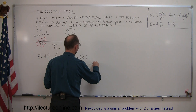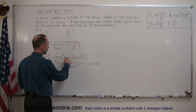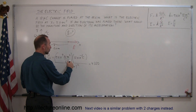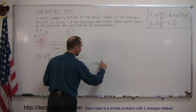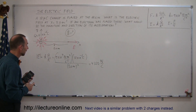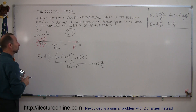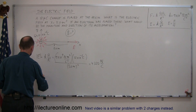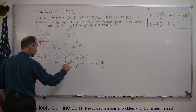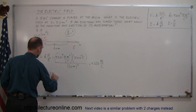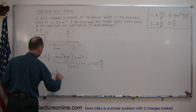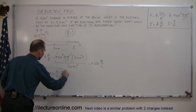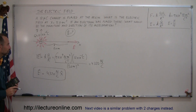Using a calculator: 9e9 times 12e−6 divided by 25 gives us 4,320. The meters squared cancel, and the coulomb squared divided by one coulomb leaves newtons per coulomb — which is the unit for the electric field. So the magnitude of the electric field is 4,320 newtons per coulomb. Written in vector format: E equals 4,320 newtons per coulomb in the positive x direction, since it points to the right.